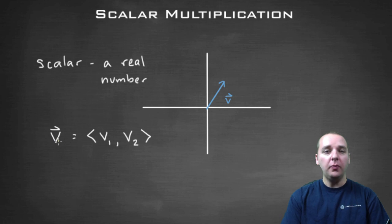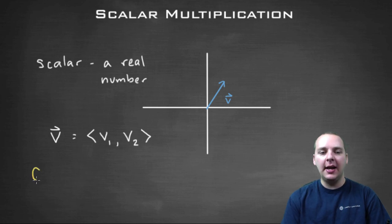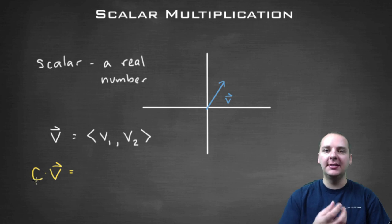If you have a vector, which we'll call vector v, which is in component form <v1, v2>, if you want to take a scalar multiple of v—in other words, this lowercase c here is a scalar, maybe it's two or three or negative one or something like that—it's very simple to multiply the scalar to a vector.